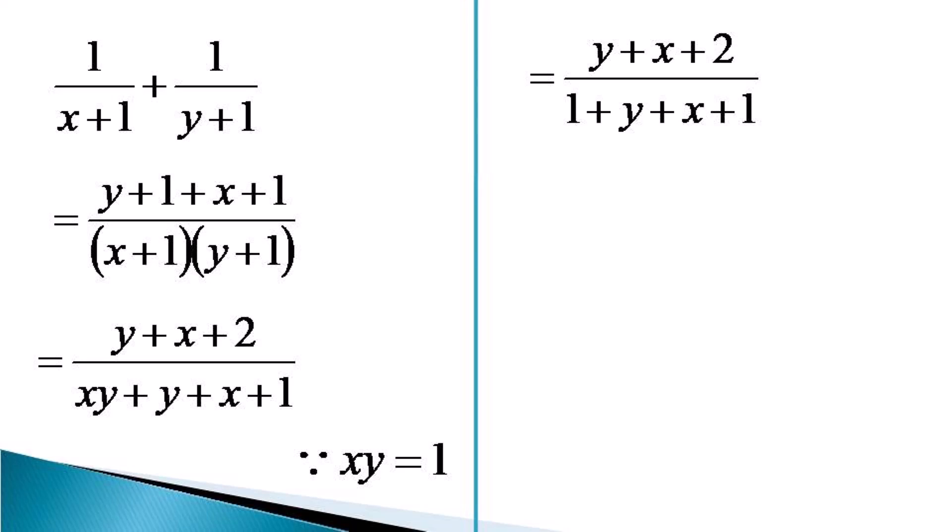We add the ones in the denominator to get (y + x + 2) / (y + x + 2), which equals 1.